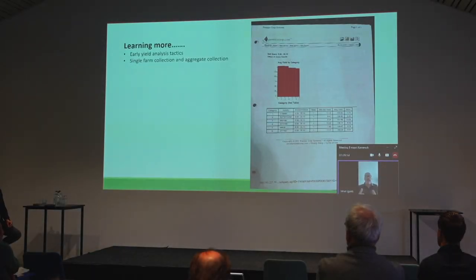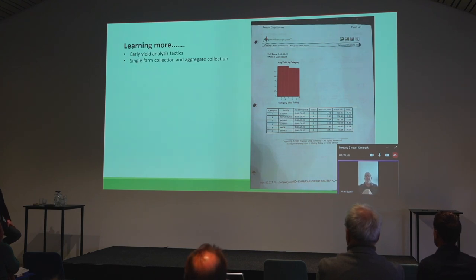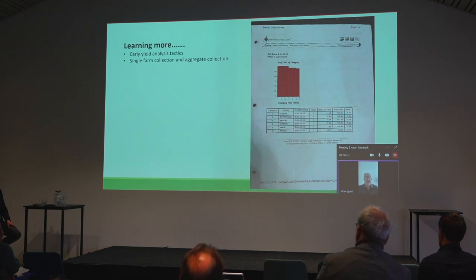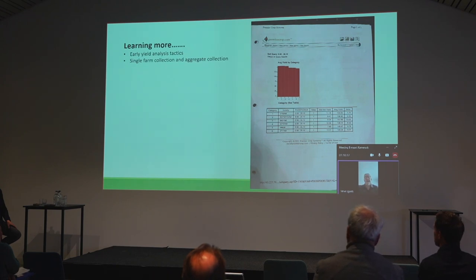By 2000, we had four or five years of data. We were really starting to figure out what we could do with this data and what we were looking at. In this slide, we show hybrid performance based on soil test. We were starting to do some multi-dimensional layering, trying to figure out what makes yield.